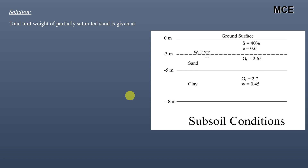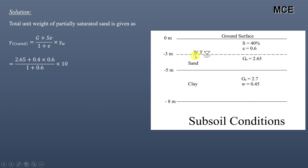First, we find the unit weights of the different layers. The total unit weight of the partially saturated sand is given by γt = (G + Se) / (1 + e) × γw. Here, G = 2.65 (specific gravity of sand particles), S = 0.4 (degree of saturation above the water table), and e = 0.6 (void ratio). This gives the total unit weight of partially saturated sand above the water table as 18.1 kN/m³.